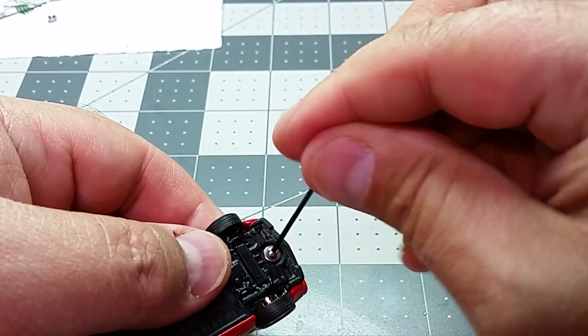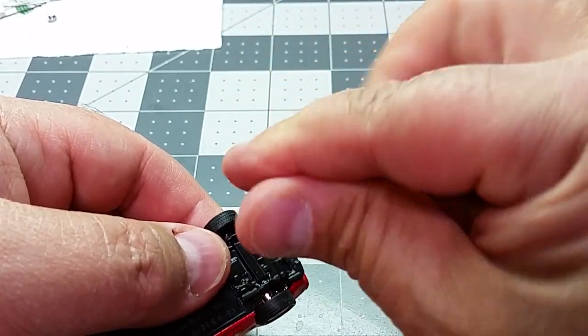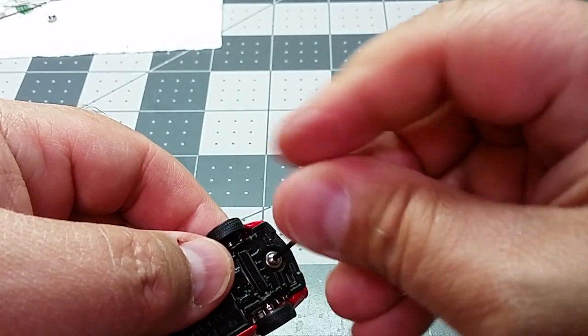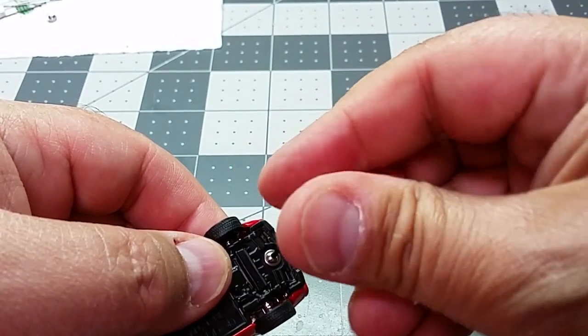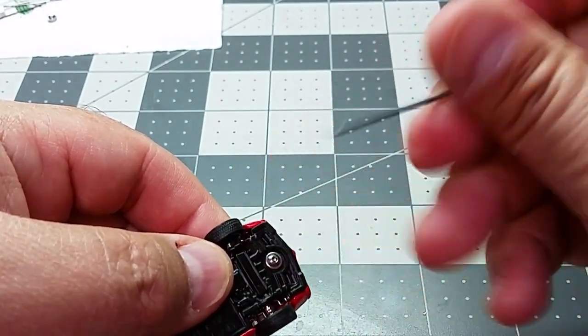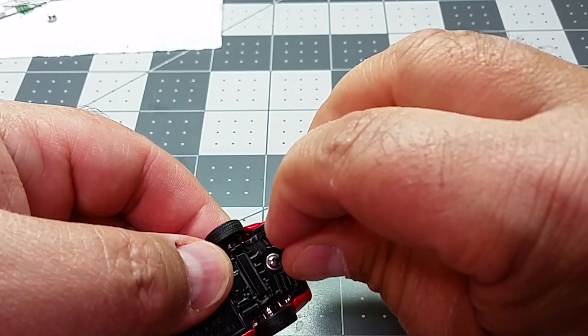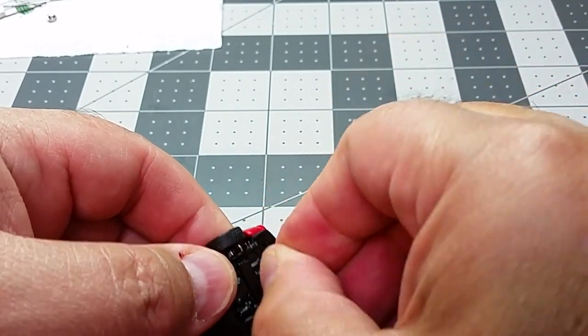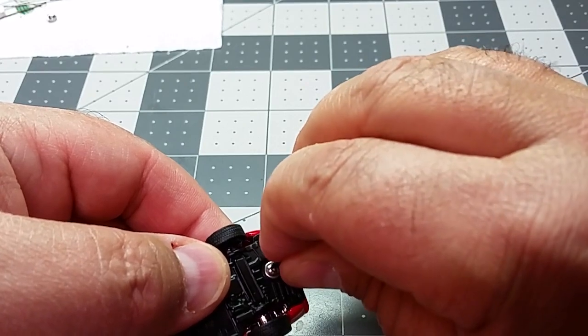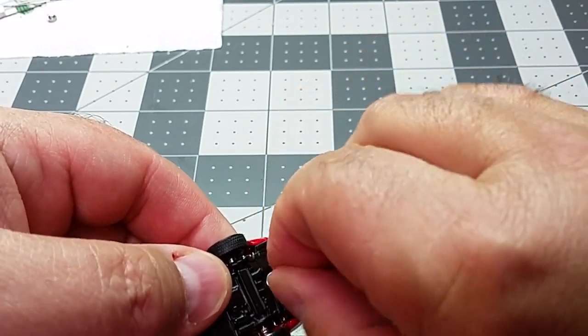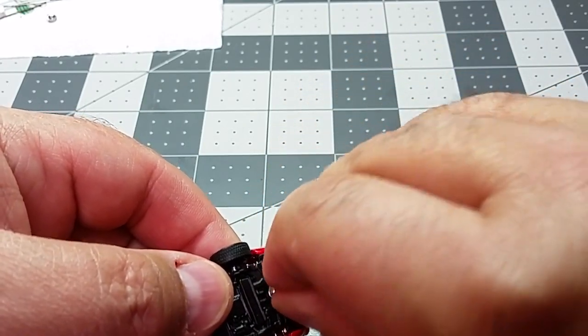I'm just showing screwing it in all the way. Once I get it snugged up, then I will tighten it up. Just make sure you don't go too tight because you might risk stripping the screw or stripping the hex head on the button head screw.